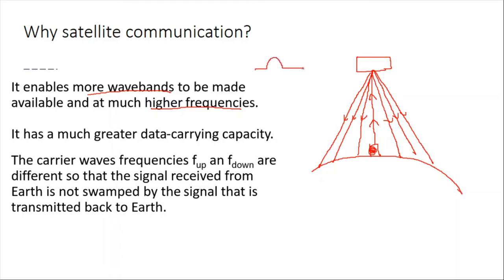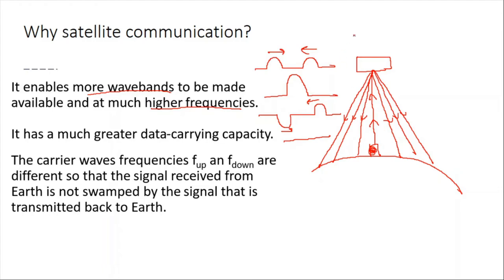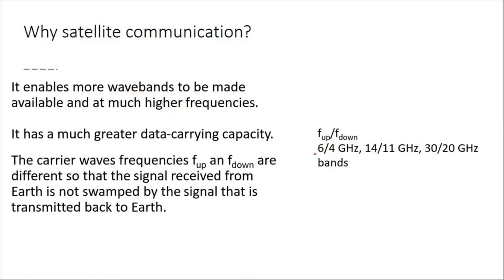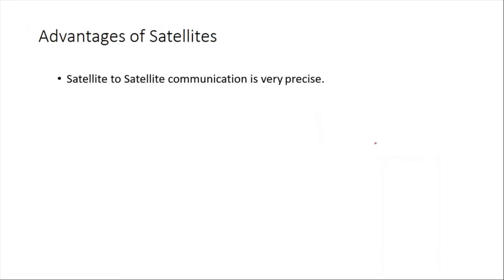When waves encounter each other there is superposition and interference. For example, two pulses moving toward each other can either add to produce a higher amplitude or cancel each other out completely. To avoid this, upward and downward frequencies are arranged to be different — for example, 6 GHz uplink and 4 GHz downlink, or 14 to 11 GHz, or 30 to 20 GHz.